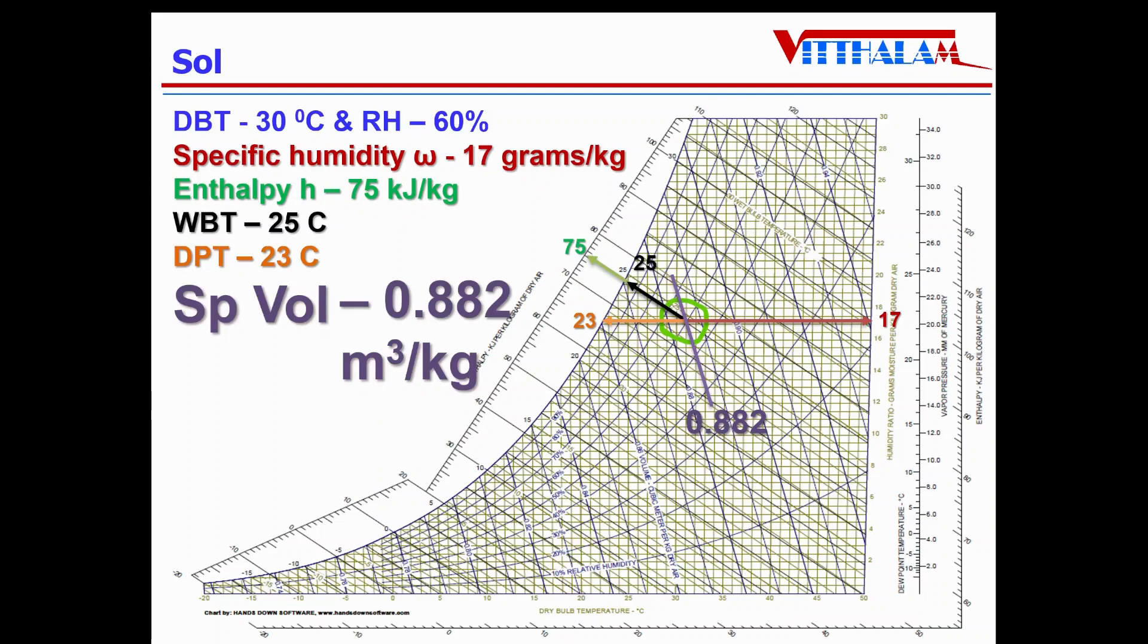So this is the way you can find out the different properties once we locate the point on the psychrometric chart. Otherwise, we can find out all this with calculations, which is a tedious process.